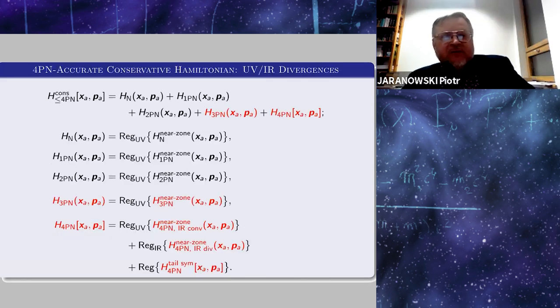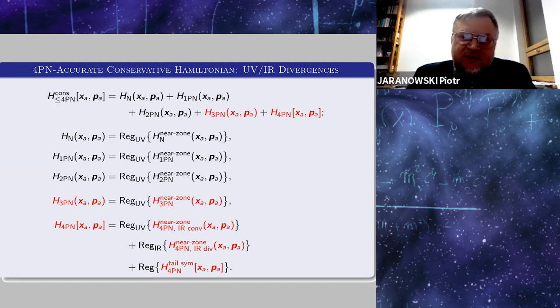Now, 4PN-accurate conservative Hamiltonian is the sum of the Newtonian, 1PN, 2PN, 3PN, and 4PN pieces. Newtonian, 1PN, 2PN, and 3PN Hamiltonians develop only UV divergences, whereas the 4PN Hamiltonian is the sum of three pieces. The first piece is UV divergent but infrared convergent, the second is UV convergent but infrared divergent, and the third is related to the tail contribution.